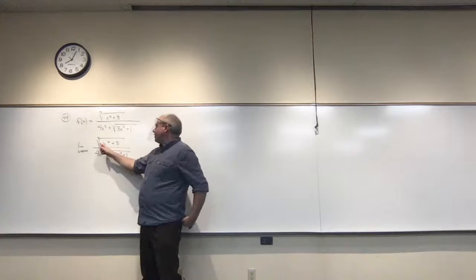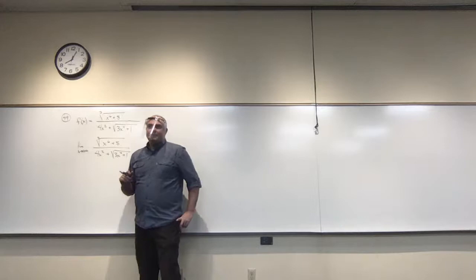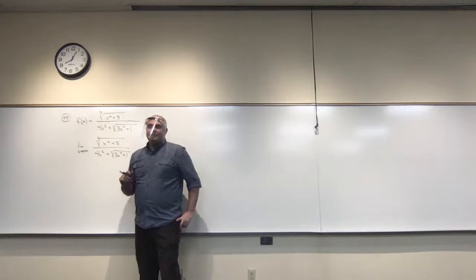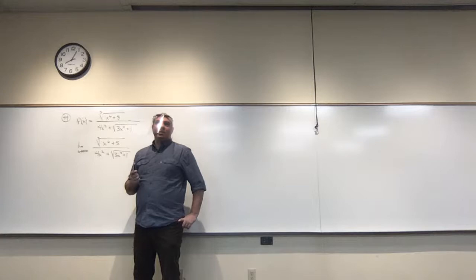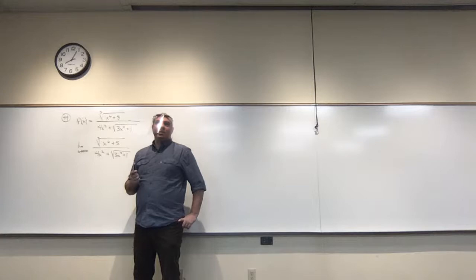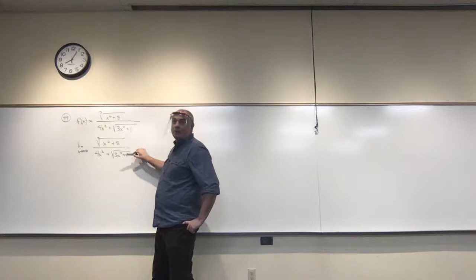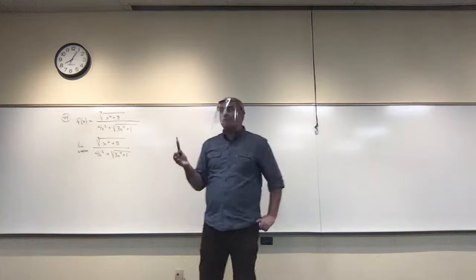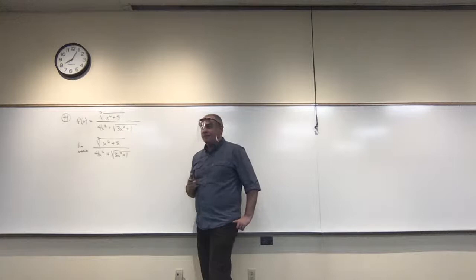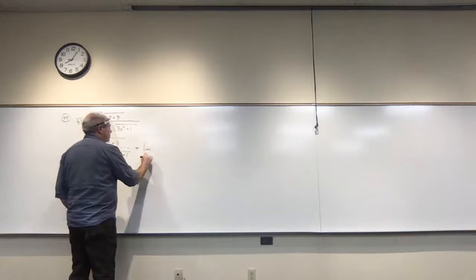Up here I'm taking the cube root of x to the sixth plus some other stuff. The cube root of x to the sixth is x squared, so the top is sort of like x squared. On the bottom we have x squared here, and the square root of x to the fourth is also x squared. So it's kind of like we have an x-squared-ish thing on top and bottom, so let's divide both by x squared.